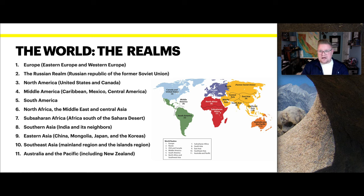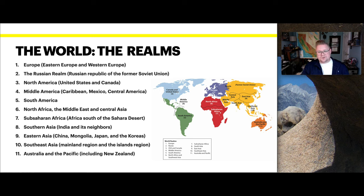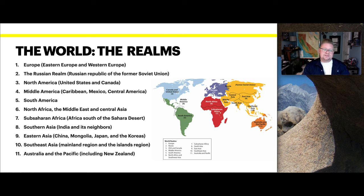Now the world realms — there are many we'll be discussing this term. The world is broken up into Europe (Eastern and Western), the Russian realm, the Americas (North, Middle, and South America), North Africa and the Middle East, Sub-Saharan Africa, Southern Asia, Eastern Asia, Southeast Asia, Australia, and the Pacific. This course is designed by chunking those realms together into modules, and within each module we'll separate them out in context.